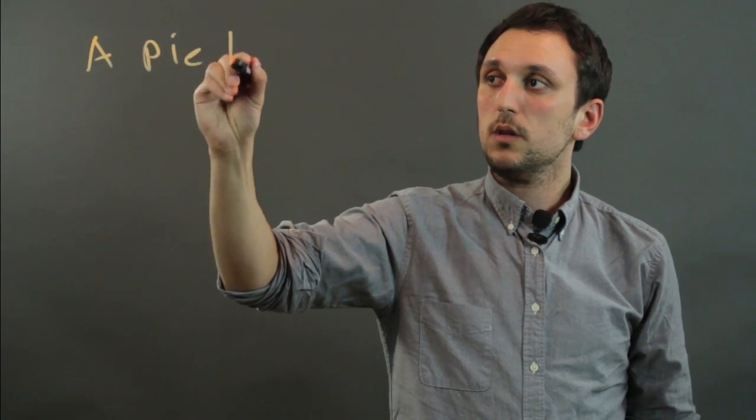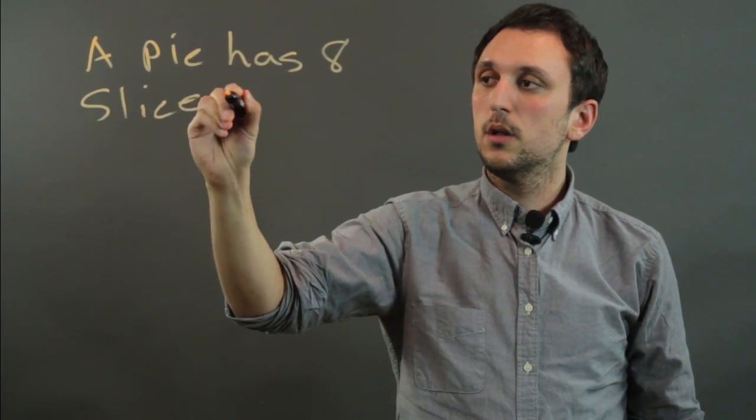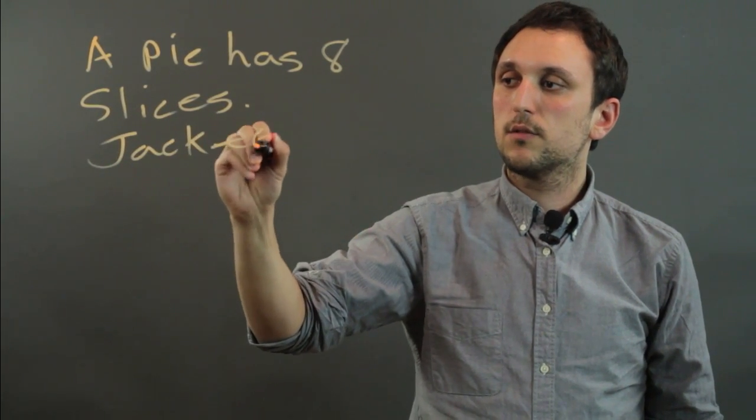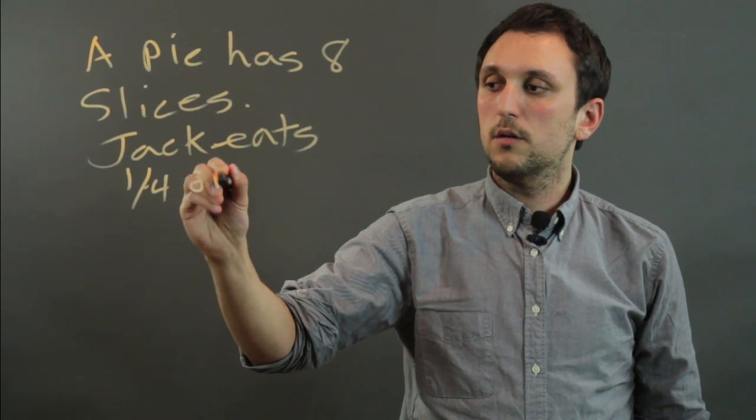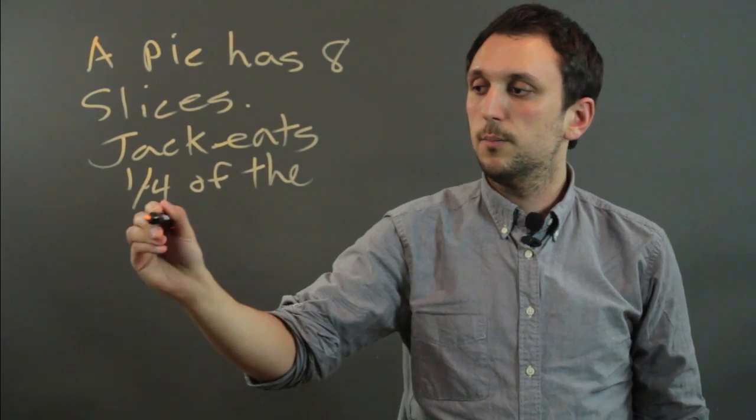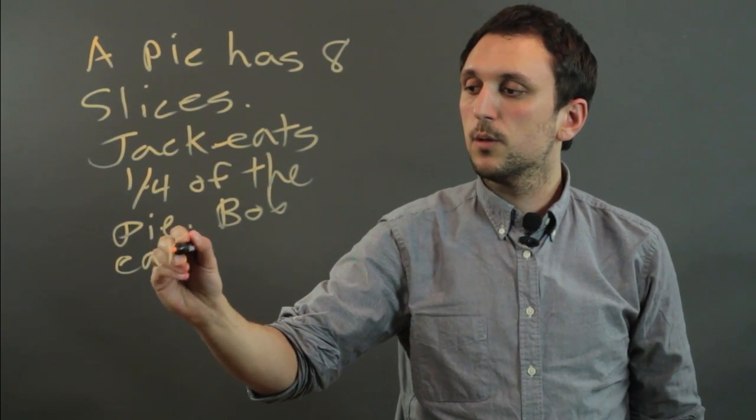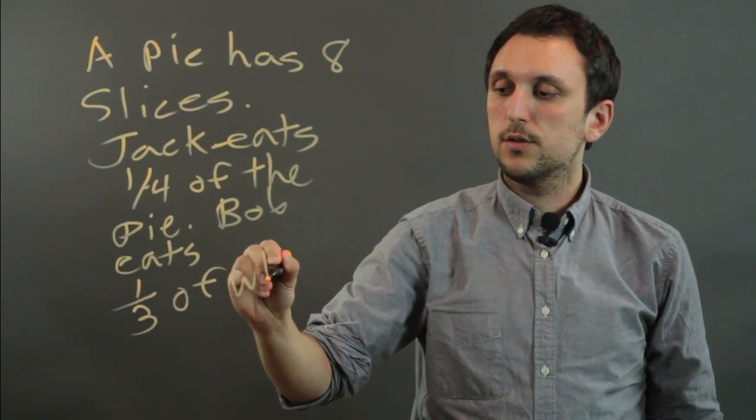a pie has eight slices. Jack eats 1 fourth of the pie. Bob eats 1 third of what's left.